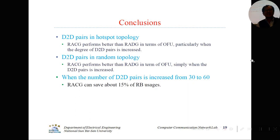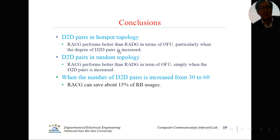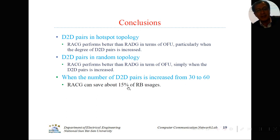In conclusion, I presented RB allocations using complete graph. For D2D pairs in hot spot topology, RACG performs better than RADG in terms of frame utilization, particularly when the number of D2D pairs increases from 30 to 60 — RACG can save about 15% of RB usage. Thank you so much. Any questions?